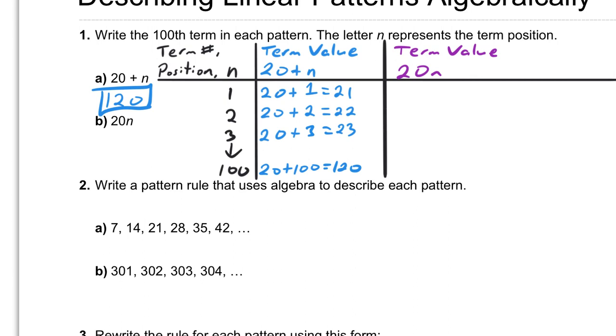We just take this expression and substitute n for whatever value is right here. So for example, we've got 20 times 1 in this one, because the n in this first case is 1. So 20 times 1 is 20. For the second one, it's 20 times 2, because n is now worth 2. 20 times 2 is 40.